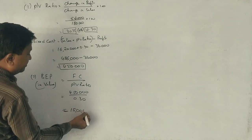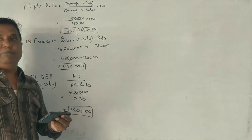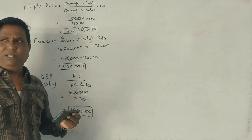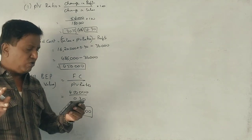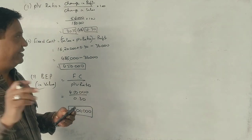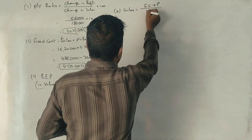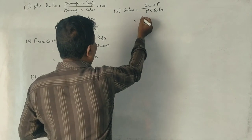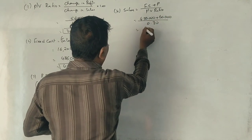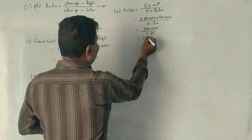Next, sales to earn profit of 60,000. Sales equals fixed cost plus profit divided by P/V ratio. Sales equals 4,50,000 plus profit required 60,000 divided by 0.30. So 5,10,000 divided by 0.30 is 17,00,000.